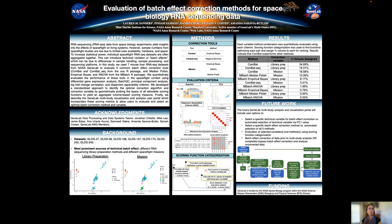Otherwise, users can evaluate batch effects using PCA, manually select the variable or variables for correction, or the variable with the highest principal component one value will be automatically selected. The user can select correction methods, or the default is to try all five. Scoring function categorization is then run, and the method-variable pair with the highest volume is selected automatically, unless the user makes a manual selection.